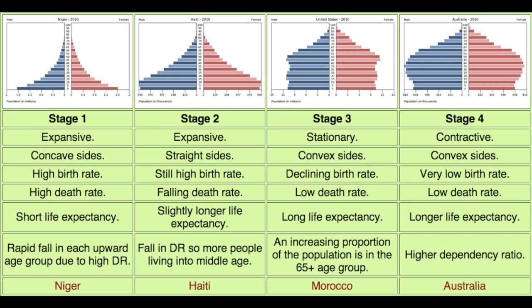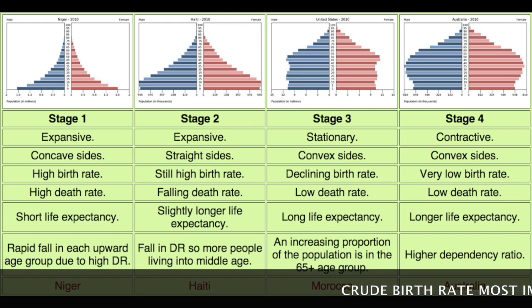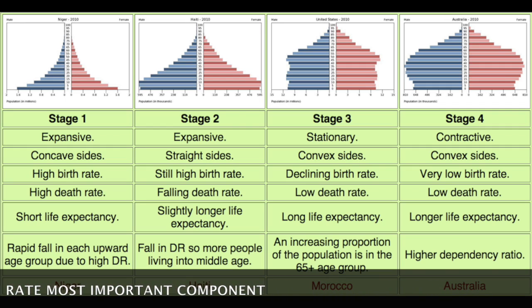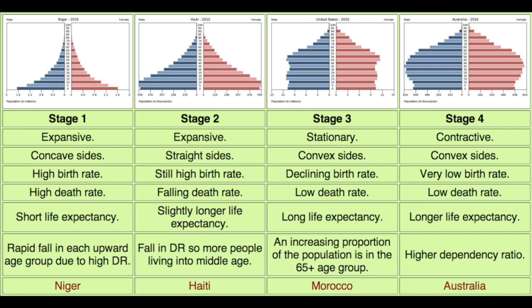To wrap up our section on population pyramids, let's take a look at this graphic showing the four basic shapes of population pyramids and some details about each. The big thing to remember is that the crude birth rate is the most important factor — not the death rate, because it doesn't matter whether you died if you haven't been born yet. So we look at births first, then we can see how long people live, and that will contribute to the shape of the population pyramid.